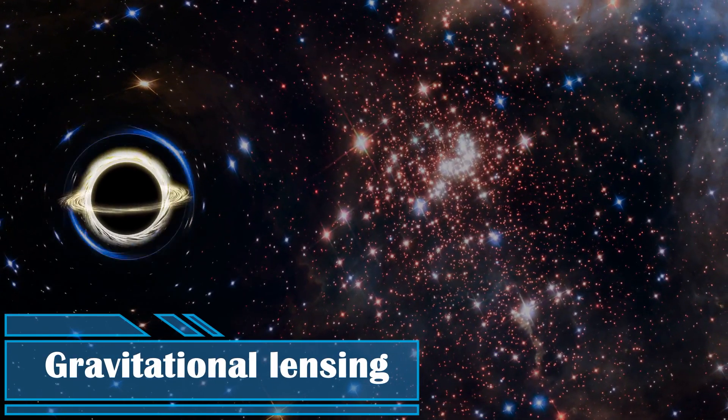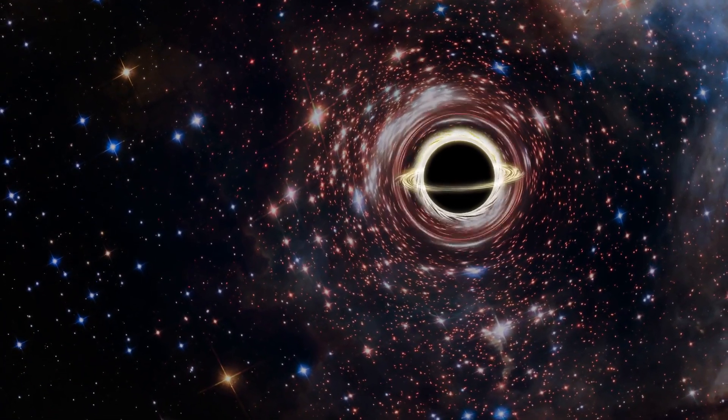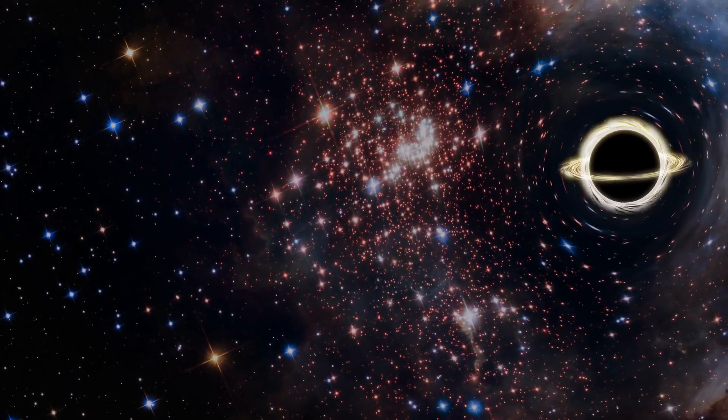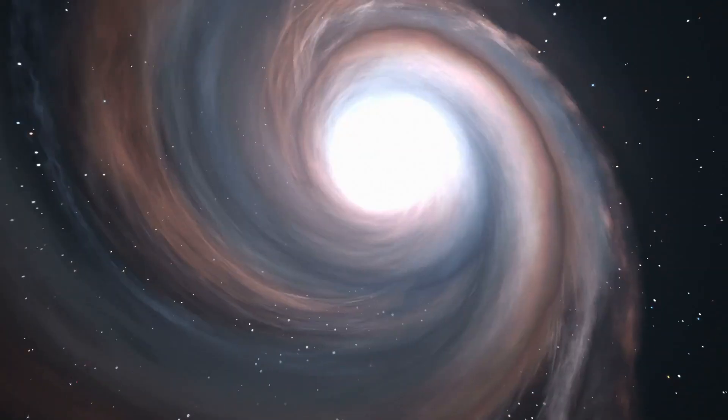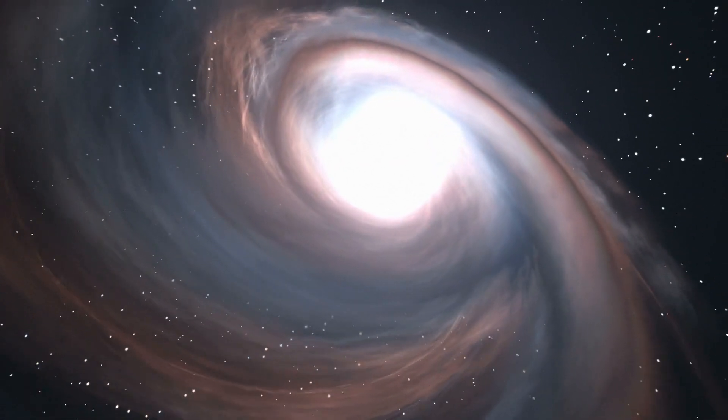Gravitational Lensing: Black holes can bend and distort light as it passes near them. This gravitational lensing effect can lead to the magnification and distortion of distant objects, allowing us to observe phenomena otherwise invisible.